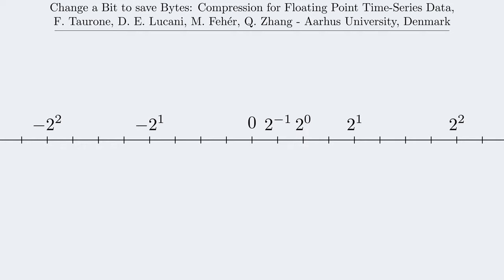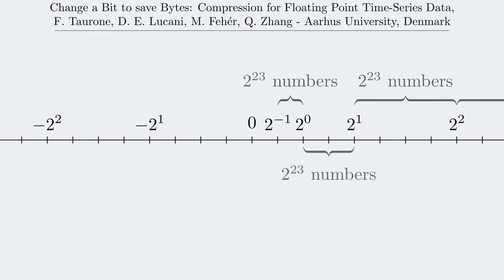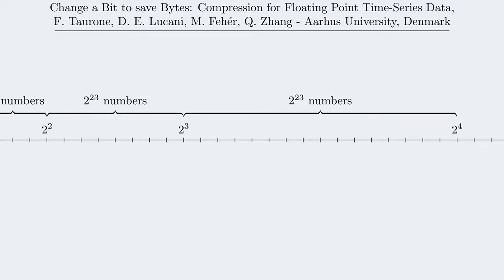First, let's take a look at the line of real numbers. The first thing to know is that we can only represent a finite set of numbers on the real axis, more specifically only 2 to the power of 23 numbers between every power of 2, assuming a 32-bit system.